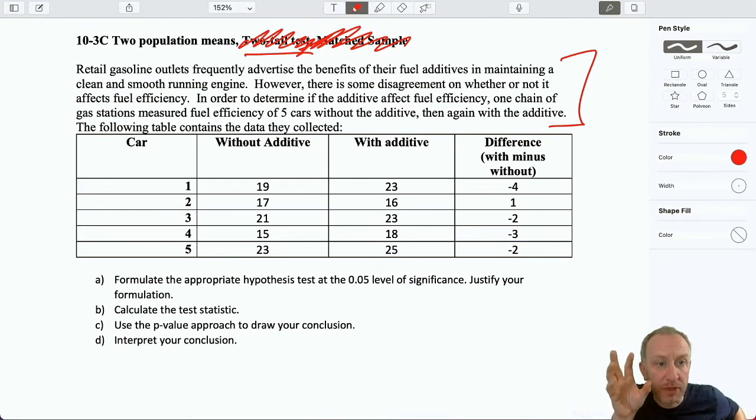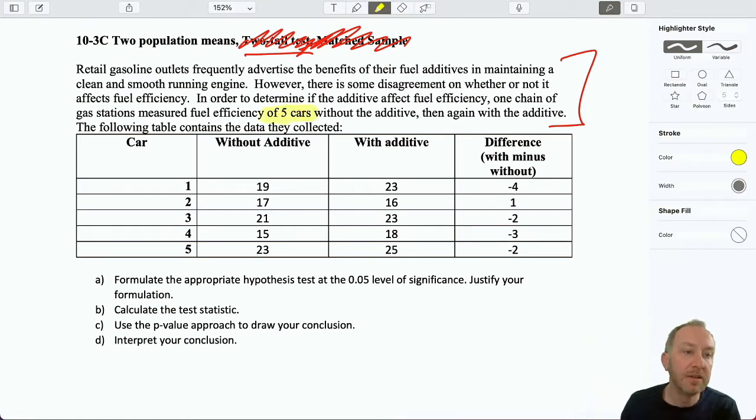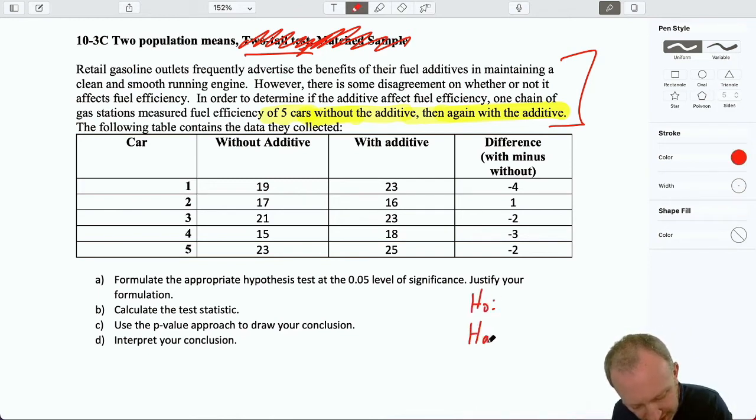But even reading the question, it tells us how the data has been collected, right? It tells us here that this one gas station measured the fuel efficiency of five cars. Five cars with the additive, then again, or without the additive, then again with the additive. So it's not telling us that they have five cars that they have the additive and another five cars with the additive, right? We don't have ten cars. We have five cars that they first gave it with the additive, then again without. So they're explaining how the data has been collected. And that as well points us towards setting this up as a matched sample.